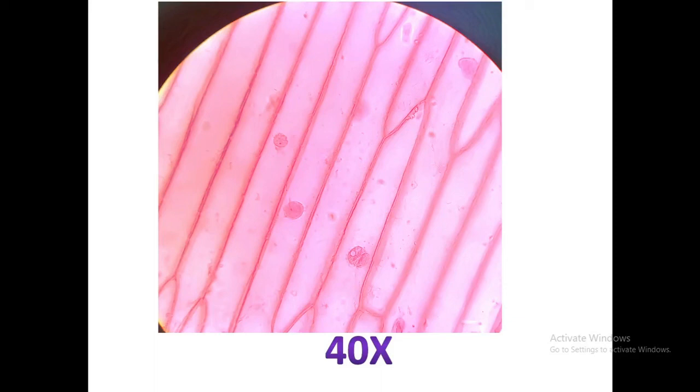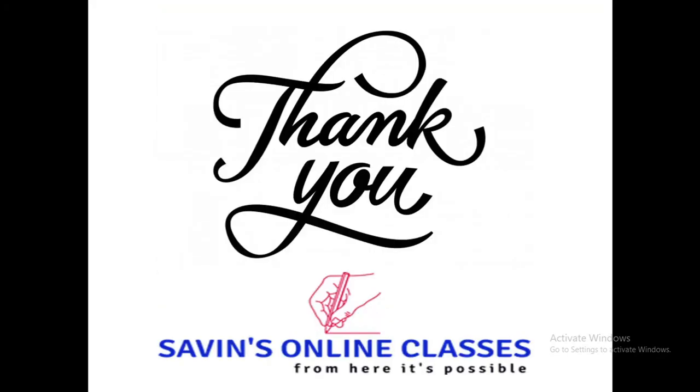So dear friends, this was all about how to prepare an onion peel slice to study the plant cells under the light microscope. In the next video, we will learn how to measure a plant cell with the help of stage and ocular micrometer. Till then, please like and share my video, subscribe my channel and press the bell icon. Thank you. Jai Hind. Bye bye.